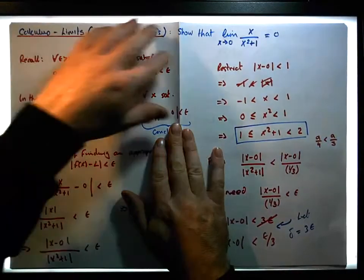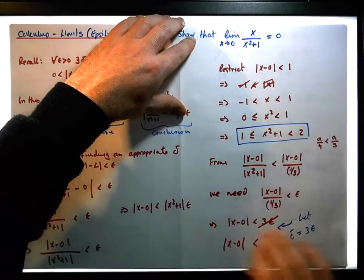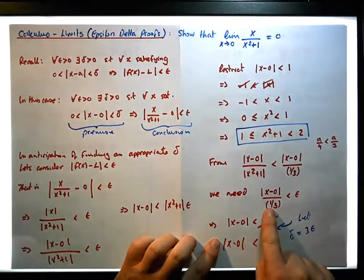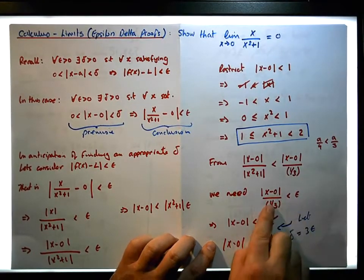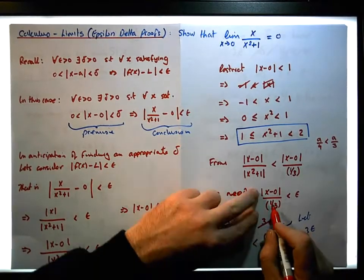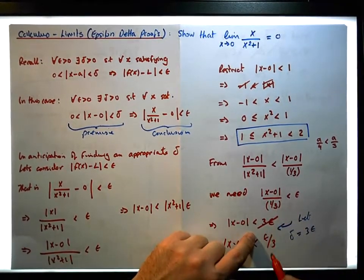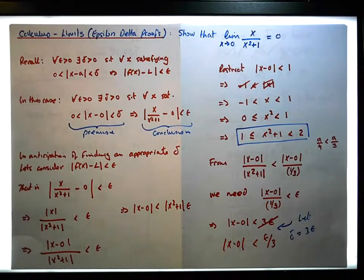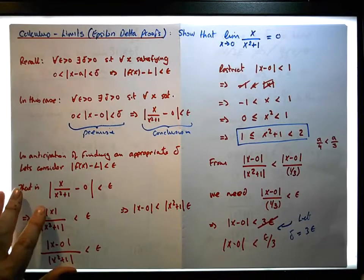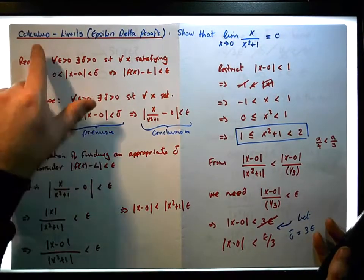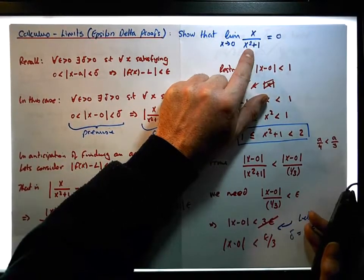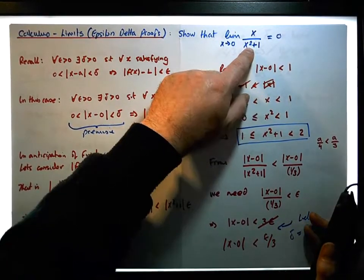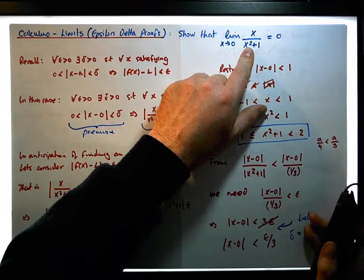I should have been more aware of that error: the expression is not three times epsilon, it's epsilon over three. Anyway, this is Jonathan Lambert with Maths and Stats. This was another video in our series on calculus and limits — specifically epsilon-delta proofs — looking at a rational function with a particular quality compared to previous questions.